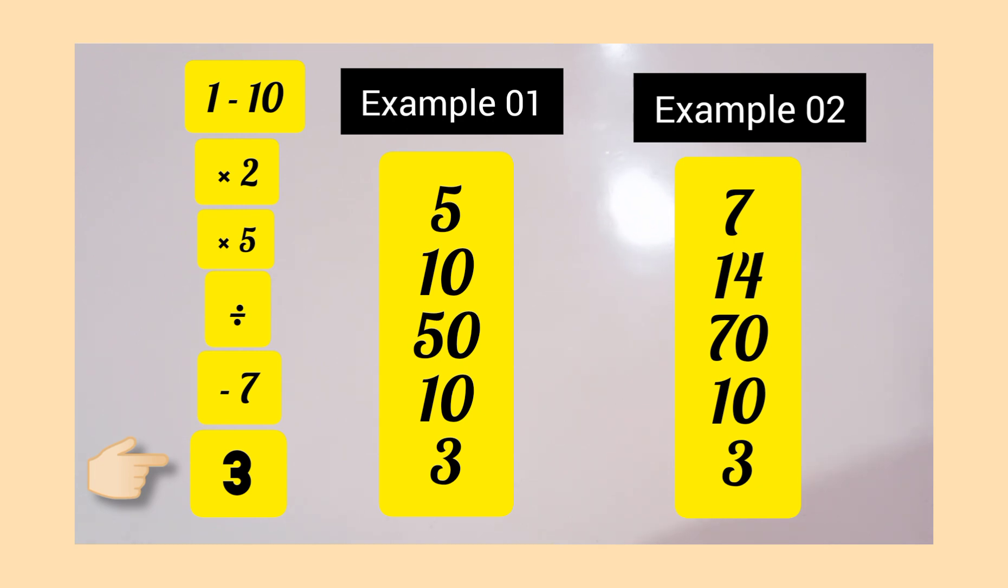Then if they divide by the original number, which is 7, they are going to get 10. And if they subtract 7, they are going to get 3. And when you guess the answer as being 3, once again you will blow their mind.